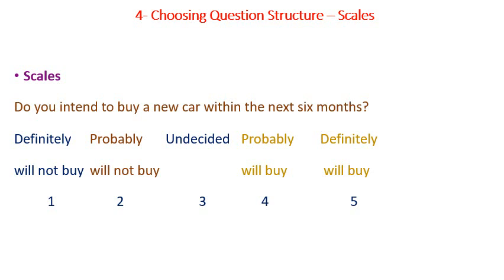Scale questions: 'Do you intend to buy a new car within the next six months?' using a scale from 1 to 5. Definitely will not buy is 1, probably will not buy is 2, undecided is 3, probably will buy is 4, definitely will buy is 5. In the middle, 3 is undecided.